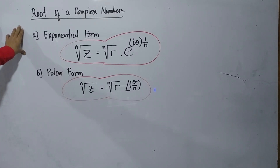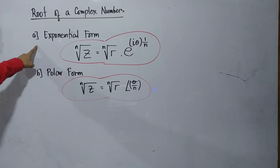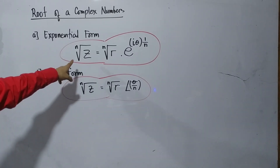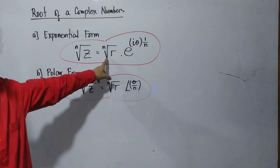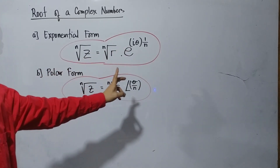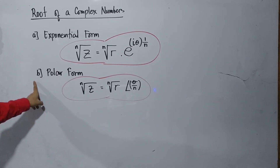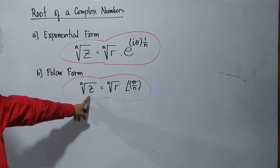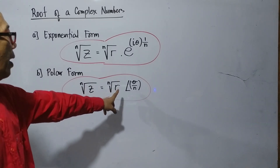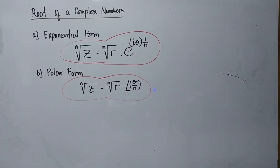For the root of a complex number, we have to consider two forms: first, the exponential and the polar form. For the exponential form, we use the formula that the n-th root of z is equal to the n-th root of r multiplied by e to the i·theta times 1 over n. For the polar form, the n-th root of z equals the n-th root of r times the angle of theta over n.